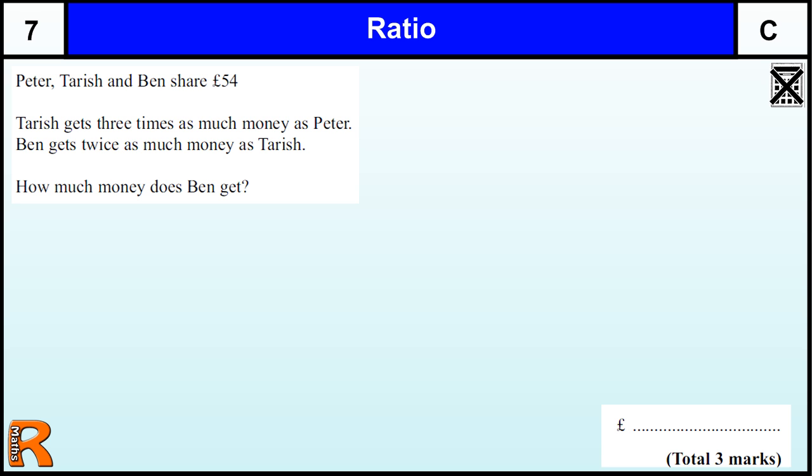Ratio. Grade C, GCSE, level 7, national curriculum. Now technically ratio really is just a grade D question, but this one I've called it grade C because it's not a straightforward given the ratio, you have to create the ratio. Not too difficult, but a little bit harder than the standard question.